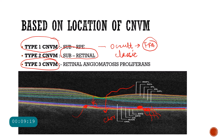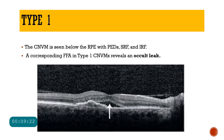Type 3 CNVM is the retinal angiomatosis proliferans, also called the RAP lesion. In Type 1, on OCT you can see the retinal pigment epithelium as a hyper-reflected zone becoming elevated into an irregular border pigment epithelial detachment, with heterogeneous hyper-reflectivity below indicating a fibrovascular PED. The presence of a hyper-reflective black area indicates subretinal fluid. Whenever there is a PED associated with subretinal fluid, it indicates possible presence of CNVM, and the corresponding FFA will reveal an occult leak — an occult CNVM.